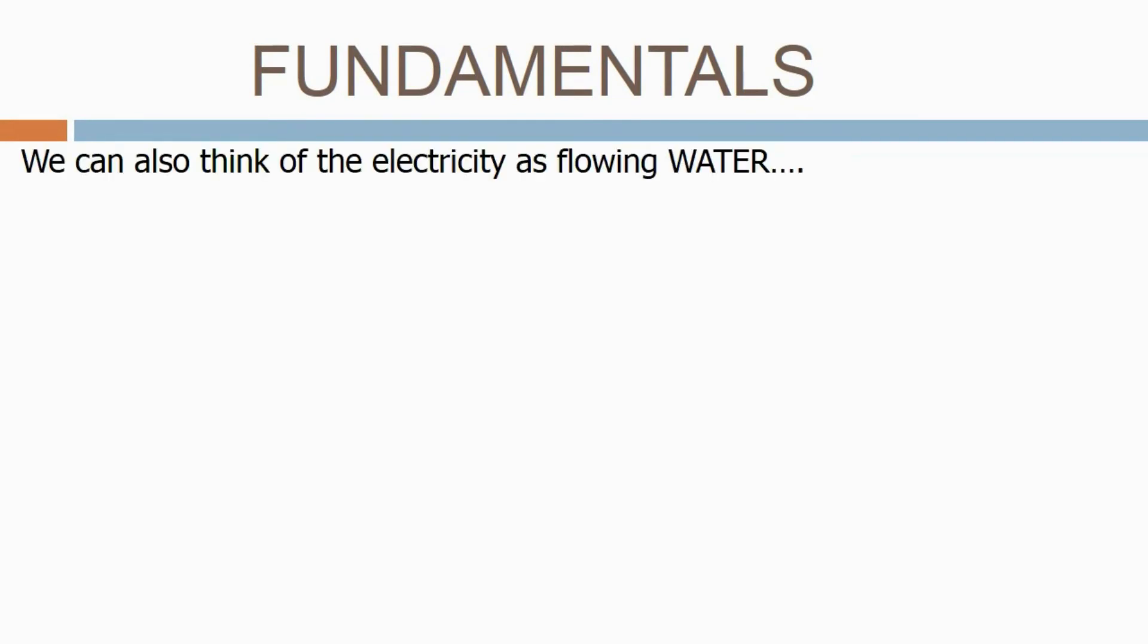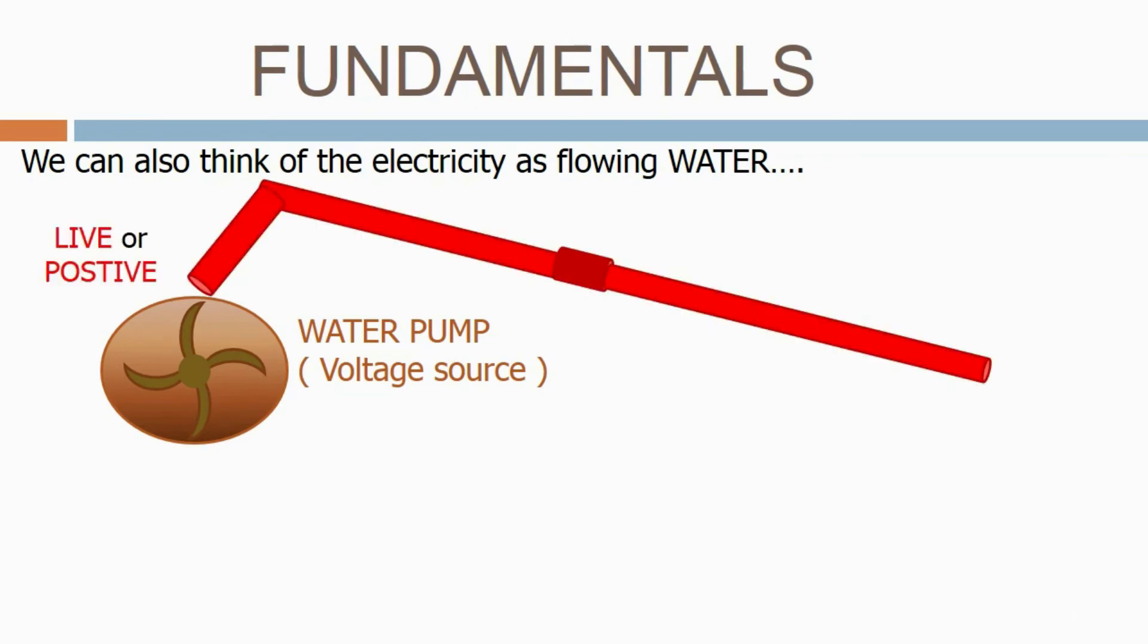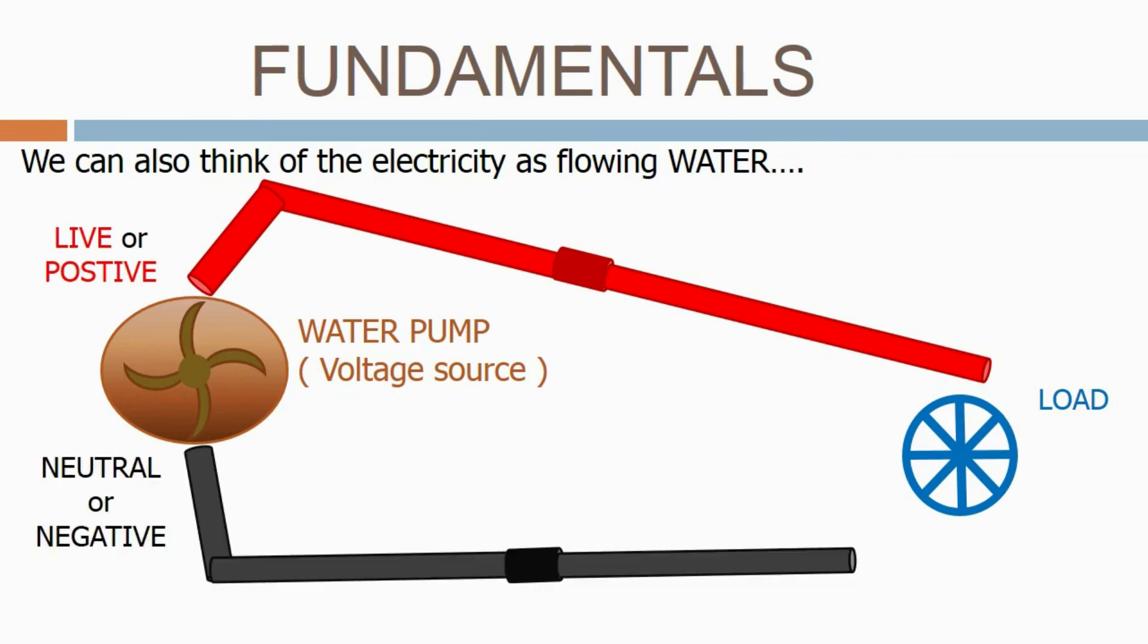We can also think of the electricity as flowing water. It's a good analogy. Next we have the water pump, i.e. the voltage source. This pumps the water around the system. Next we have the live or positive pipe to take the water from the source to the load. Then we have the load. In this case, it's a water wheel, but in real life in an electrical system, it might be a heater or a light bulb. Then we have the neutral or negative pipe to take the water from the load back to the source.